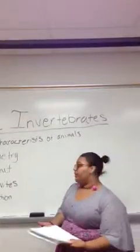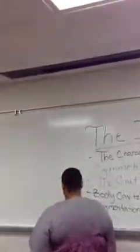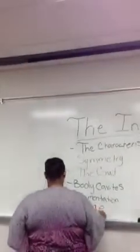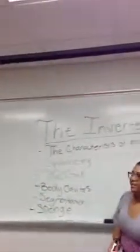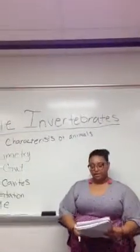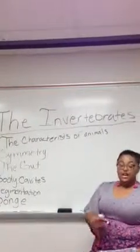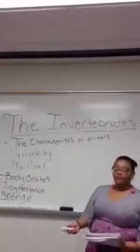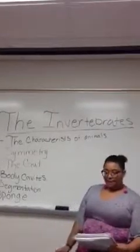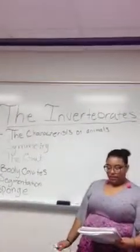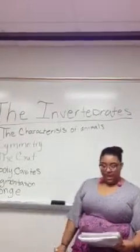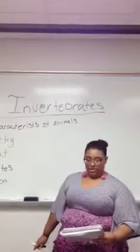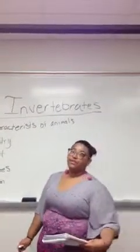Another example would be a sponge. It is an invertebrate. It has no symmetry, no tissue, and no organs. They reproduce sexually. They are microscopic swimming in the larva stage. Water flows in, up, and out of the sponge, and they are also filter feeders.